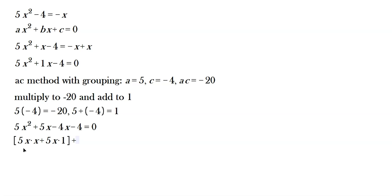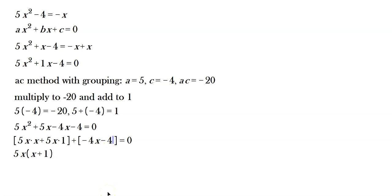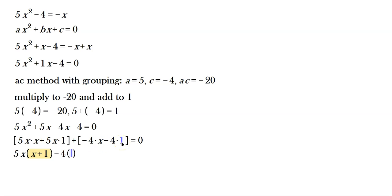For the other group, you have negative 4x minus 4 in brackets. Pull out negative 4: negative 4 times x and negative 4 times 1. So negative 4 goes outside the parentheses, and what's left within is x plus 1 — not negative 1, because the negative goes with the 4. So you put them together: (5x minus 4)(x plus 1) equals 0.